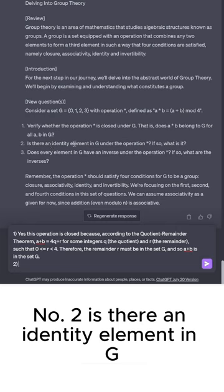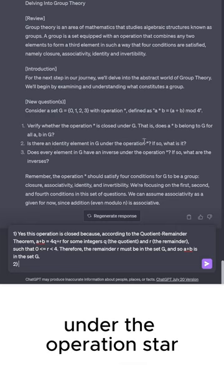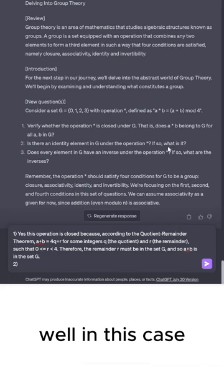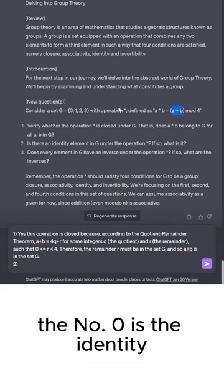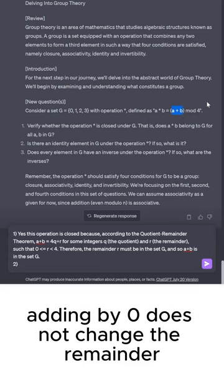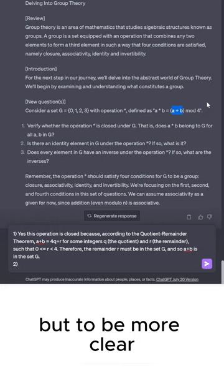Number two, is there an identity element in G under the operation *? If so, what is it? Well, in this case, the answer is yes, because with addition mod 4, the number 0 is the identity. Adding by 0 does not change the remainder.